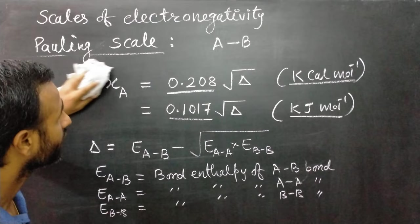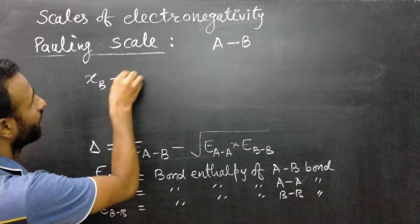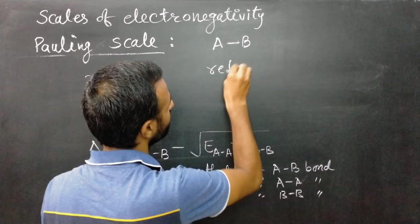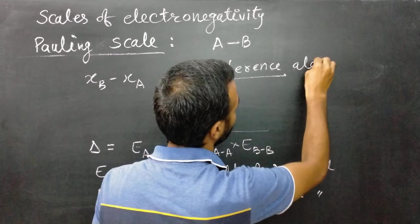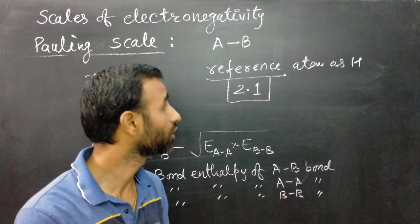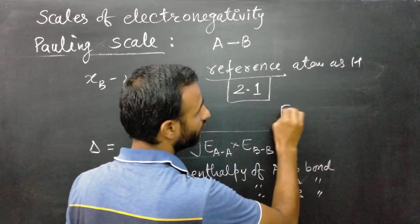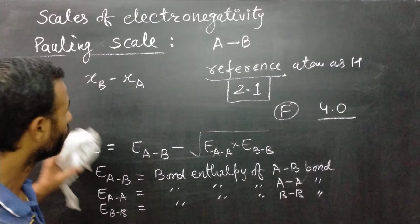Since this formula gives a difference in electronegativity, we take hydrogen as a reference atom with electronegativity of 2.1. By taking 2.1 as the electronegativity of hydrogen, we can calculate the electronegativity of all other atoms. The maximum electronegativity is that of fluorine, which is 4.0. Most of the time we use the Pauling scale of electronegativity.